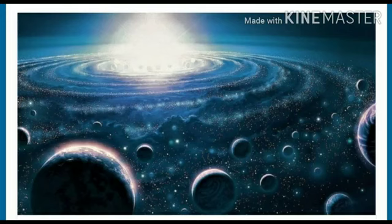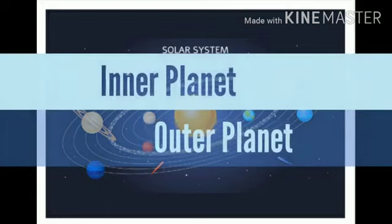And these planets have very solid rocky surface. The next one is outer planets which are placed away from the sun. And these are Jupiter, Saturn, Uranus and Neptune.